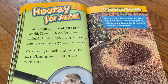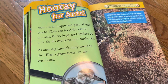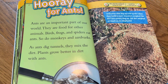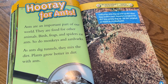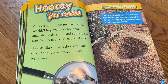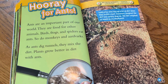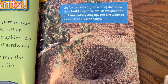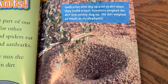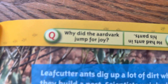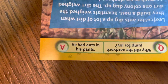Hooray for ants! Ants are an important part of our world. They are food for other animals — birds, frogs, and spiders eat ants, and so do monkeys and aardvarks. As ants dig tunnels, they mix the dirt. Plants grow better in dirt with ants. A leaf cutter ant digs a lot of dirt when they build a nest. Scientists weighed the dirt one colony dug up — it weighed as much as six elephants! Holy moly. Why did the aardvark jump for joy? He had ants in his pants!